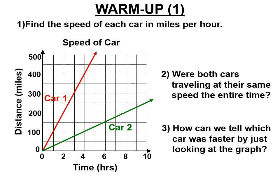We're going to find the speed of these two cars. If a car starts at zero, and one hour later it's gone 100 miles, and two hours it's gone 200 miles, and three hours it's gone 300 miles, then it's going 100 miles per hour.